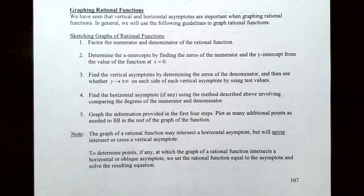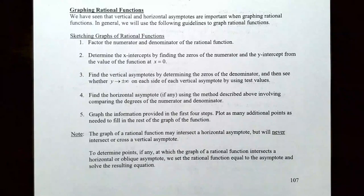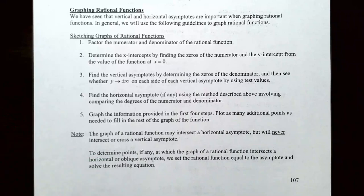When graphing rational functions, the graph might cross or intersect a horizontal asymptote — we'll discuss that in the examples. However, you can never cross or touch a vertical asymptote, because y values either increase or decrease without bound on each side. To find points where the graph intersects a horizontal or oblique asymptote, set the rational function equal to the asymptote and solve the resulting equation.